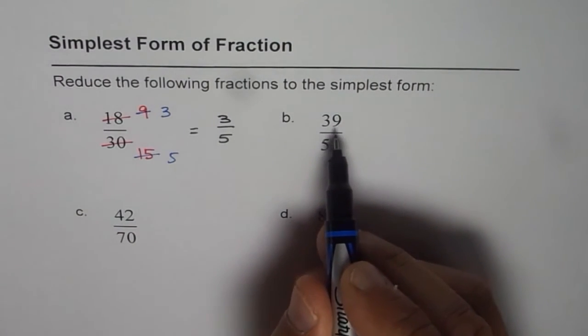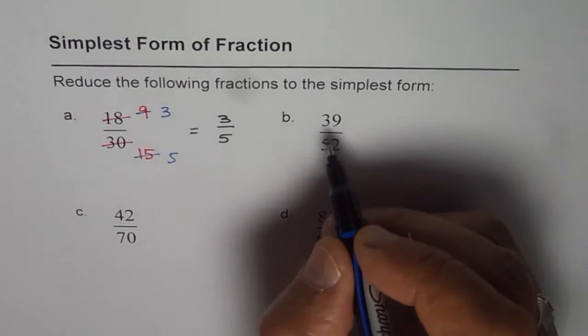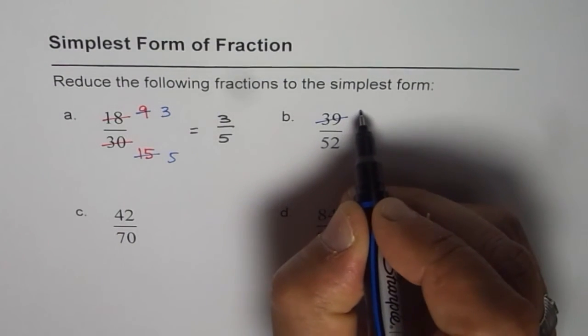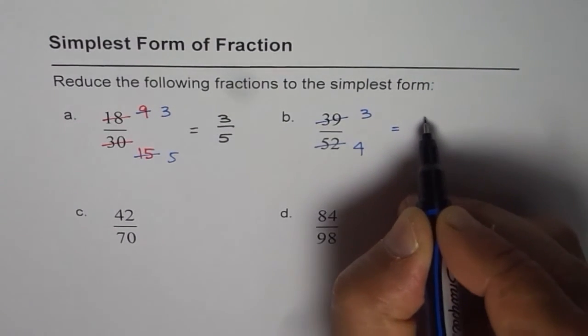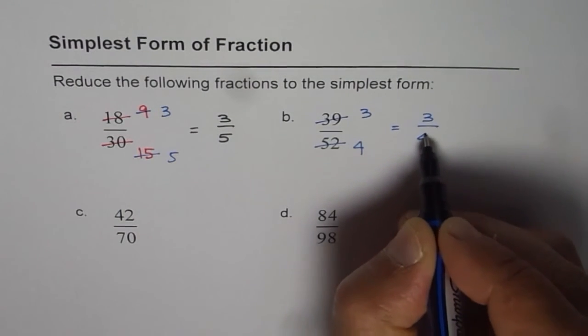The common factor here actually is 13. 13 times 3 is 39 and 13 times 4 is 52 and so we get 3 over 4 as our answer.